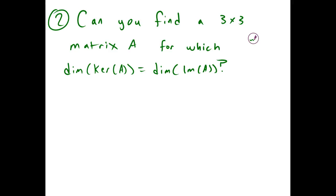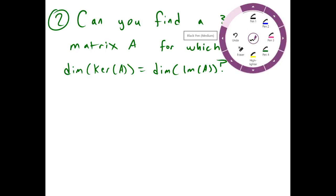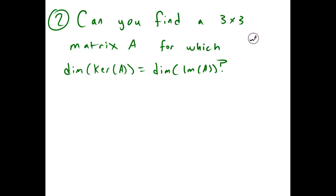For our second example, we have more of a theoretical question: can you find a 3 by 3 matrix A for which the dimension of the kernel of A equals the dimension of the image of A? To answer this question, you have to think about what theorem relates these two things — and that is the rank-nullity theorem.